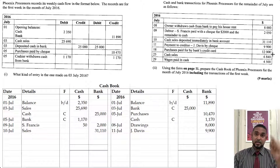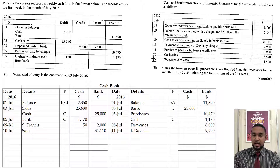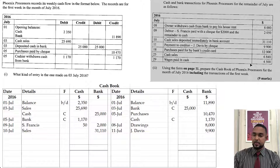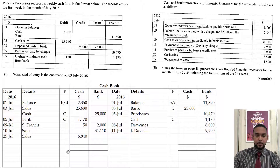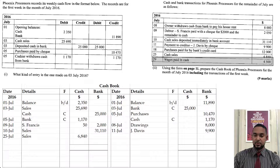Cash sales — $6,840. That's going to go on the debit side under the cash column; it came from sales. And finally, wages paid in cash — $4,500. So that's going to go on the credit side under the cash column.